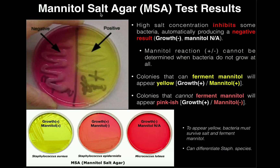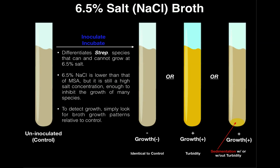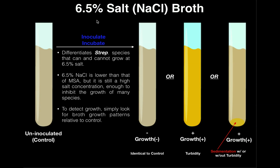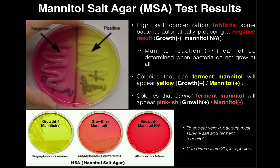In this same week that we do MSA we also do six and a half percent salt broth. Six and a half percent salt is still a very high salt concentration and enough to inhibit the growth of most bacteria. For mannitol salt agar it's one percent higher than that — actually 7.5 percent salt — which will inhibit the growth of even more species of bacteria. So those are the two things: sugar and salt.